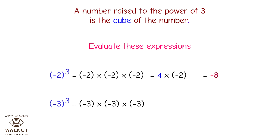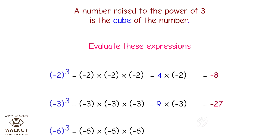Minus 3 cube is equal to minus 3 into minus 3 into minus 3. So first, minus 3 into minus 3 is equal to plus 9, and plus 9 into minus 3 is equal to minus 27. Hence, minus 3 cube is equal to minus 27. Minus 6 cube is equal to minus 6 into minus 6 into minus 6. So first, minus 6 into minus 6 is equal to plus 36, and plus 36 into minus 6 is equal to minus 216. Therefore, minus 6 cube is equal to minus 216.